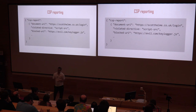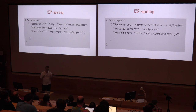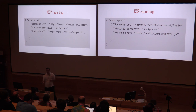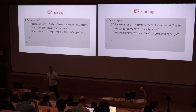CSP reporting is really important if you're deploying a content security policy. It also applies to HPKP: if a user is served a rogue certificate for your site, you can include the report-uri directive and the browser will send you a report saying somebody out there has a valid certificate for your domain, so you can start to take action.